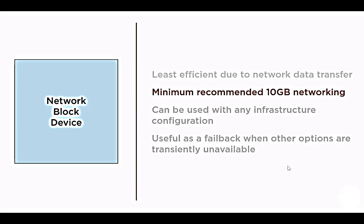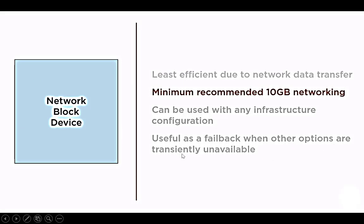The third method is the least efficient due to network data transfer. This method uses networking, so it is very slow compared to the other two. The minimum recommendation is 10 Gbps networking. It can be used with any infrastructure configuration. It is useful as a failback when other options are transiently unavailable — we always use this Network Block Device method as a failover method when one of the primary methods fails.